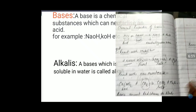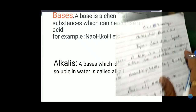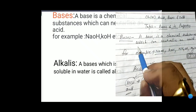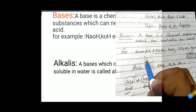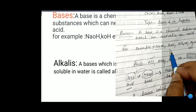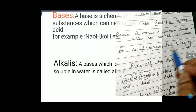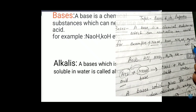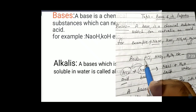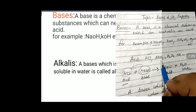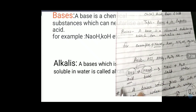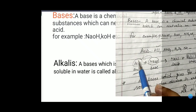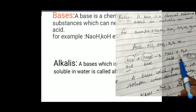Now we will discuss bases. A base is a chemical substance which can neutralize an acid. Examples of bases: NaOH (sodium hydroxide), KOH (potassium hydroxide), NH₄OH (ammonium hydroxide), Mg(OH)₂ (magnesium hydroxide). These are all bases. A base is a chemical substance which, when it reacts with acid, neutralizes into salt and water.